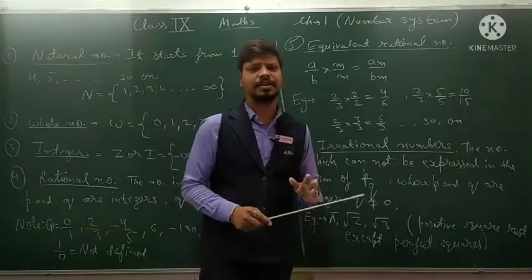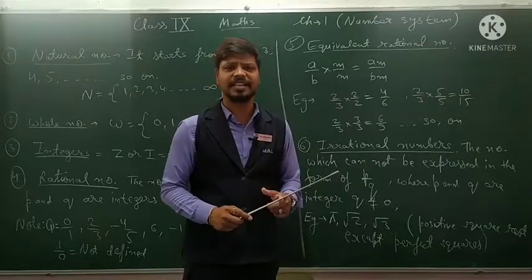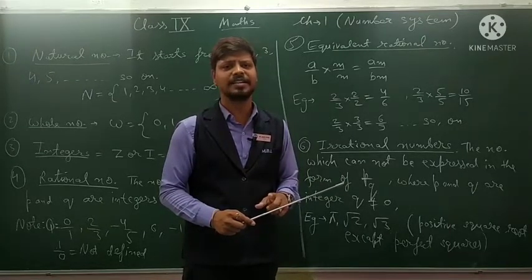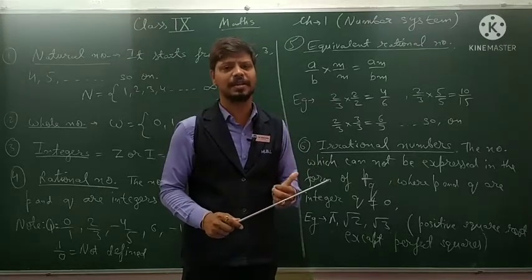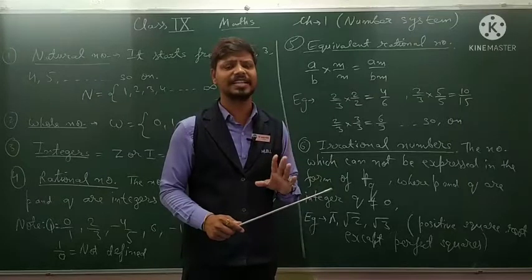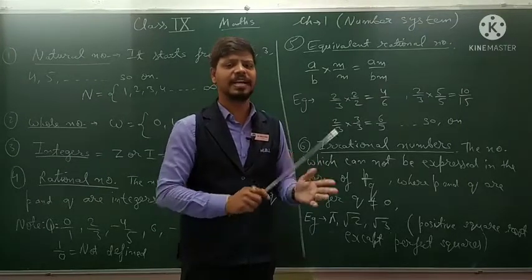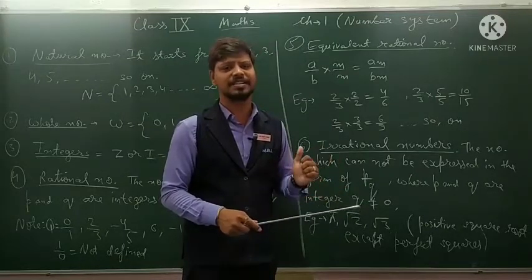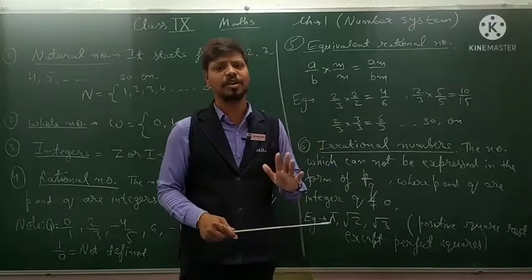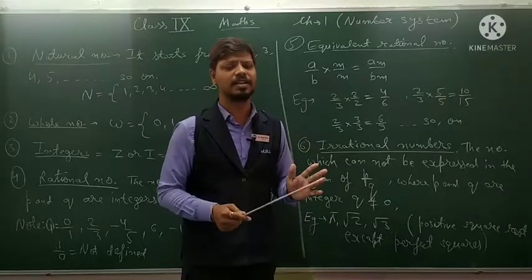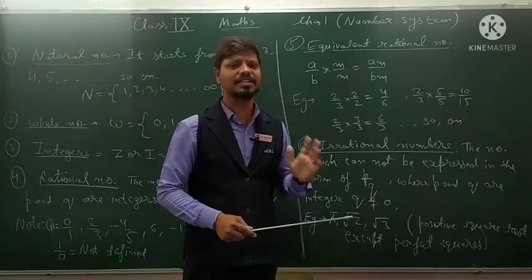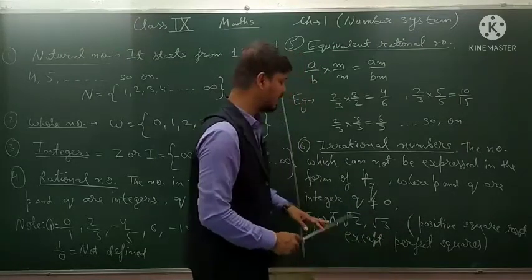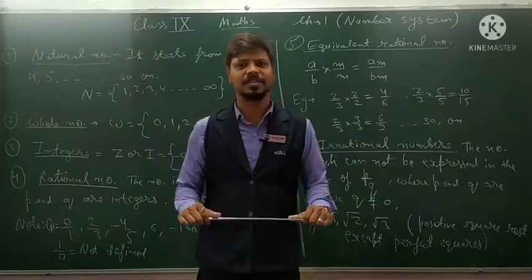Root 5 is an irrational number. Root 6, root 7, root 8 are irrational numbers. Root 9 is not an irrational number because root 9 is a perfect square — it equals 3, which is a rational number. So root 9 is a perfect square and it is not an irrational number. Root 10, root 11, root 12, root 13, root 14, root 15 are irrational numbers. Root 16 is a perfect square, so it is not an irrational number. All positive square roots except perfect squares are known as irrational numbers. Hope you understand this video, thank you.